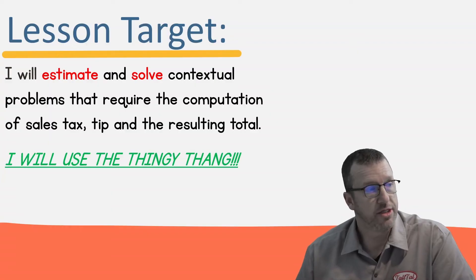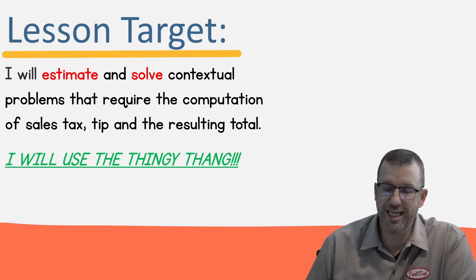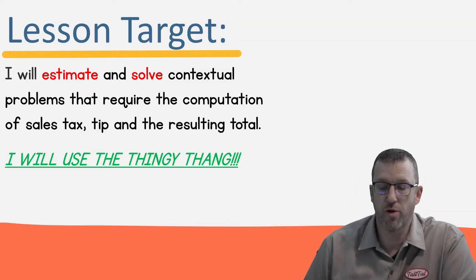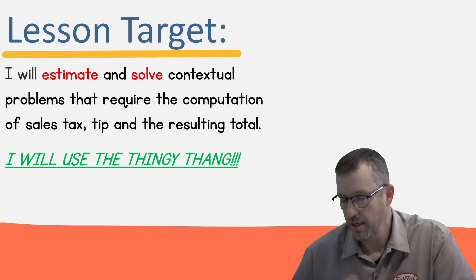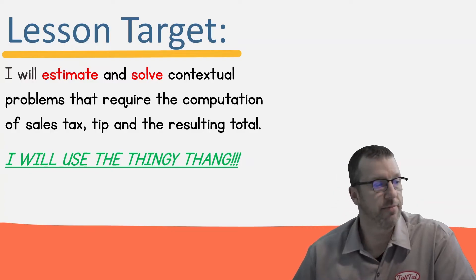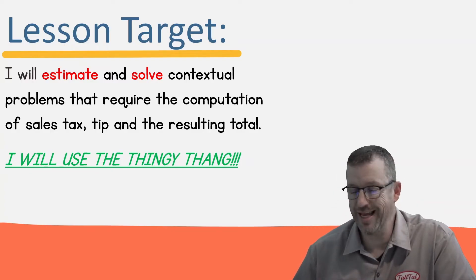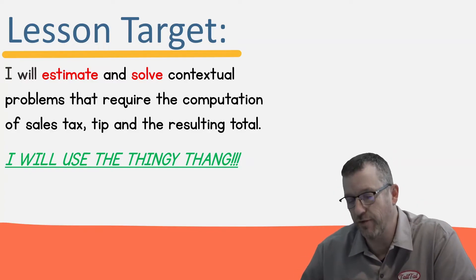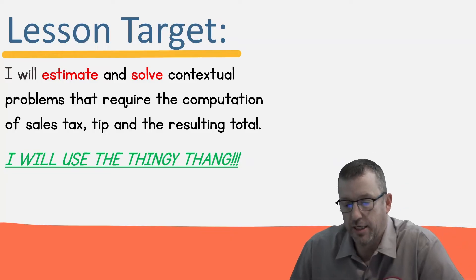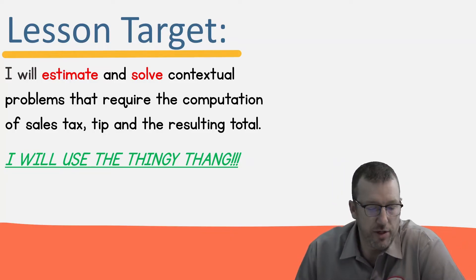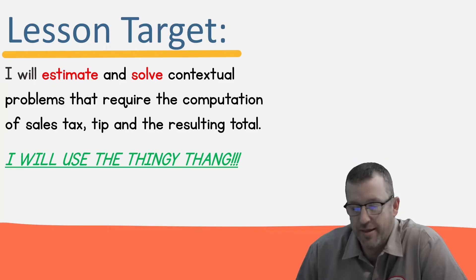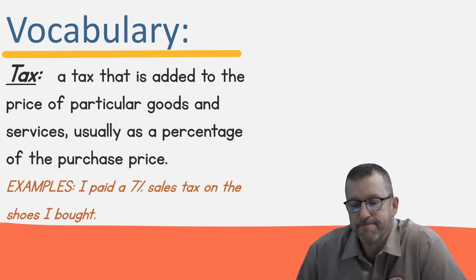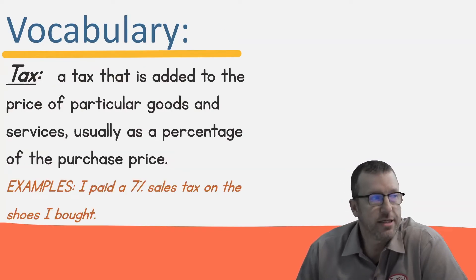Today we're going to estimate and solve contextual problems that require computation of sales tax and tip. We're going to be using the thingy thang — make sure you go watch that video if you haven't, because it is a big part of everything we do here, as it relates to proportional reasoning.